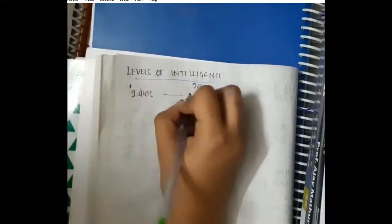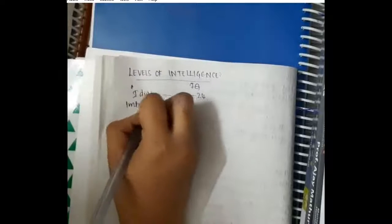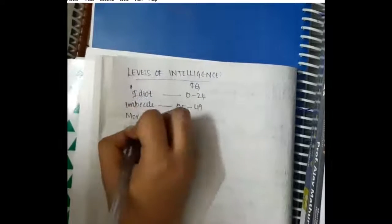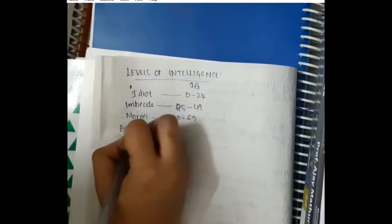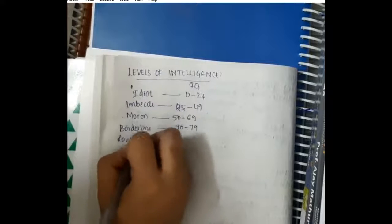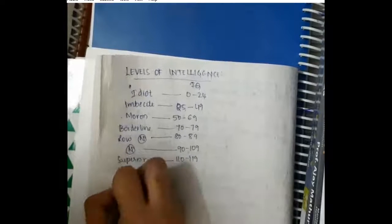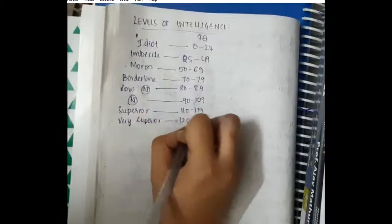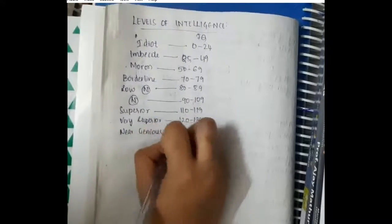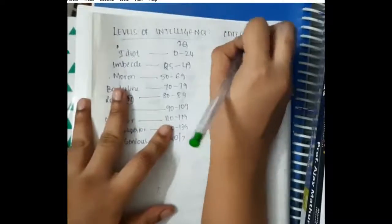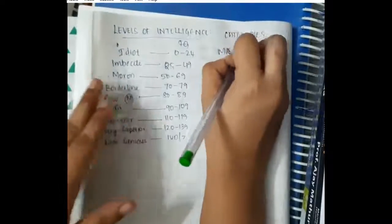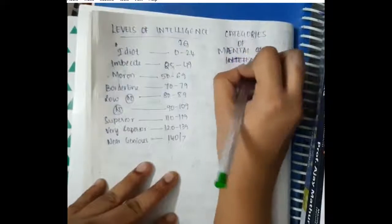Levels of intelligence based on IQ: Idiot has IQ 0 to 24, imbecile 25 to 49, moron 50 to 69, borderline 70 to 79, low normal 80 to 89, normal 90 to 109, superior 110 to 119, very superior 120 to 139, and near genius is more than 140 IQ.